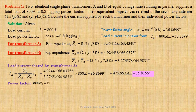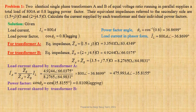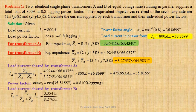Operating power factor of transformer A, cos phi A, equals cos of 35.8155 degree, that is equal to 0.8109 lagging. Load current shared by transformer B: IB equals ZA divided by ZA plus ZB, into IL. Using values we get 3.3541 at an angle 63.4349 degree, divided by 8.2765 at an angle 64.9831 degree, into 800 at an angle minus 36.8699 degree.